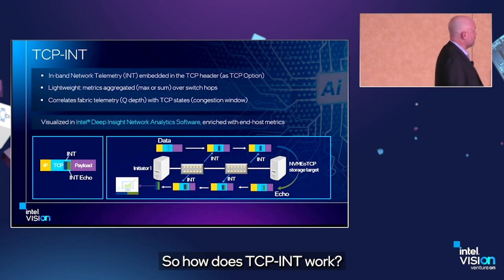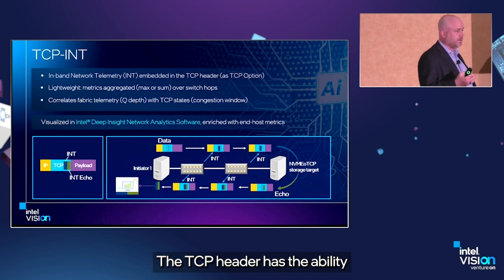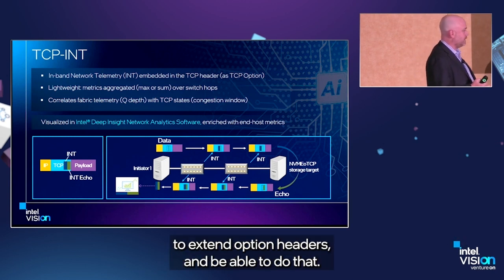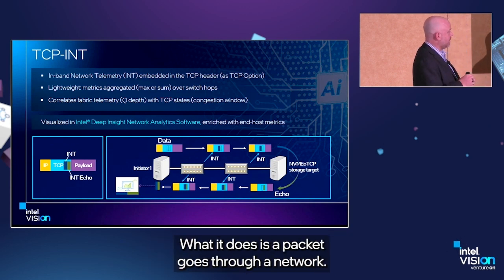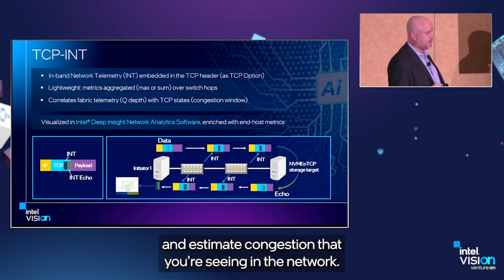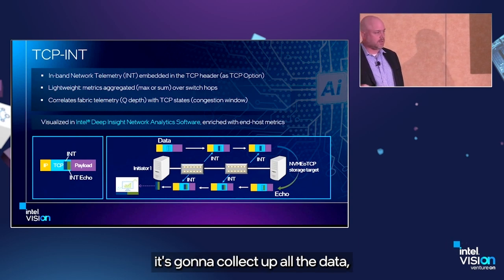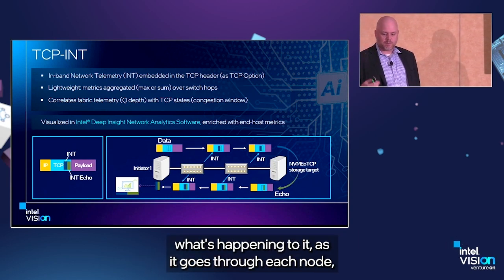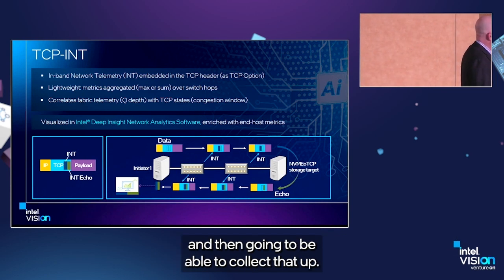How does TCP INT work? It's basically embedded into the TCP headers. The TCP header has the ability to have option or extended option headers. It's very lightweight — as a packet goes through a network, it adds the ability to look at queue depth or latency and estimate congestion. As the packet traverses through all the different nodes in the network, it collects all the data about what's happening at each node.